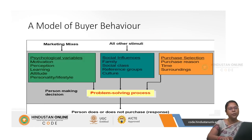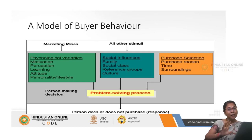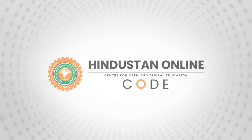In today's session we saw the model of purchase behavior and the psychological variables in detail — specifically motivation and perception in depth — while the remaining variables like learning, attitude, personality, and lifestyle were covered as a bird's eye view. The remaining parts will be covered in the next class. Thank you.